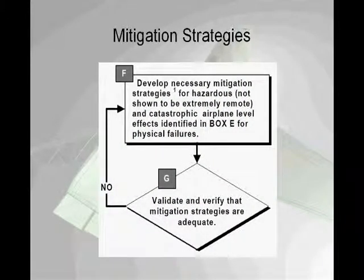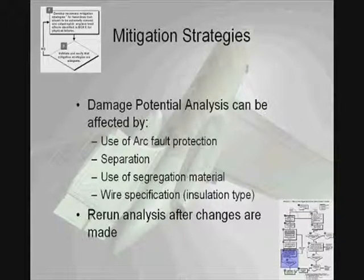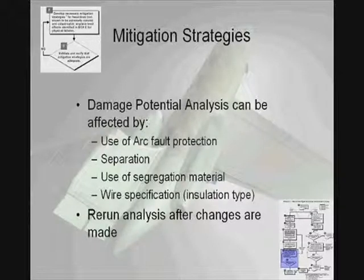The damage potential analysis is affected by a number of parameters, including the use of arc fault protection, separation, the use of segregation materials, and also the type of wire specification, particularly the installation type.